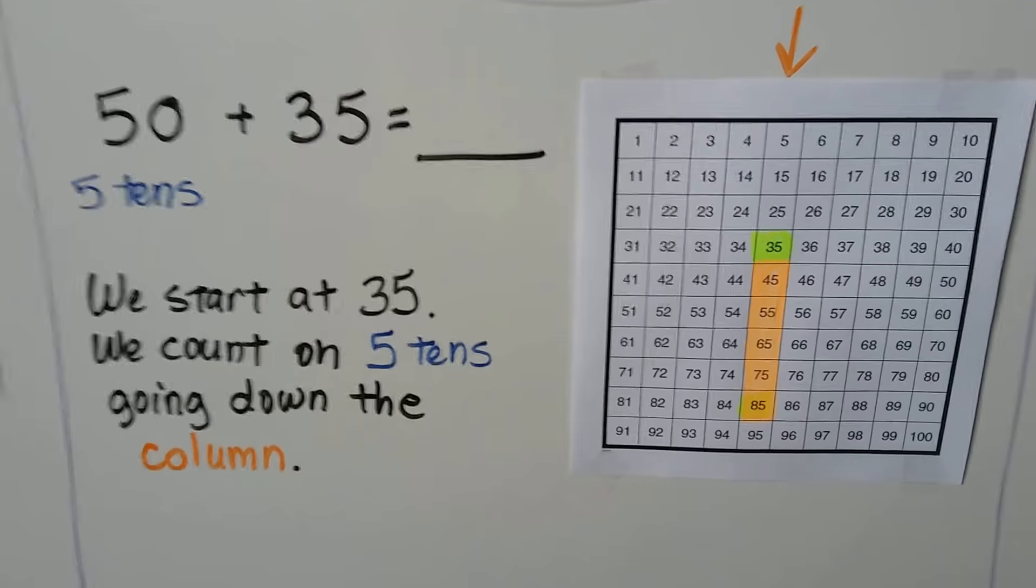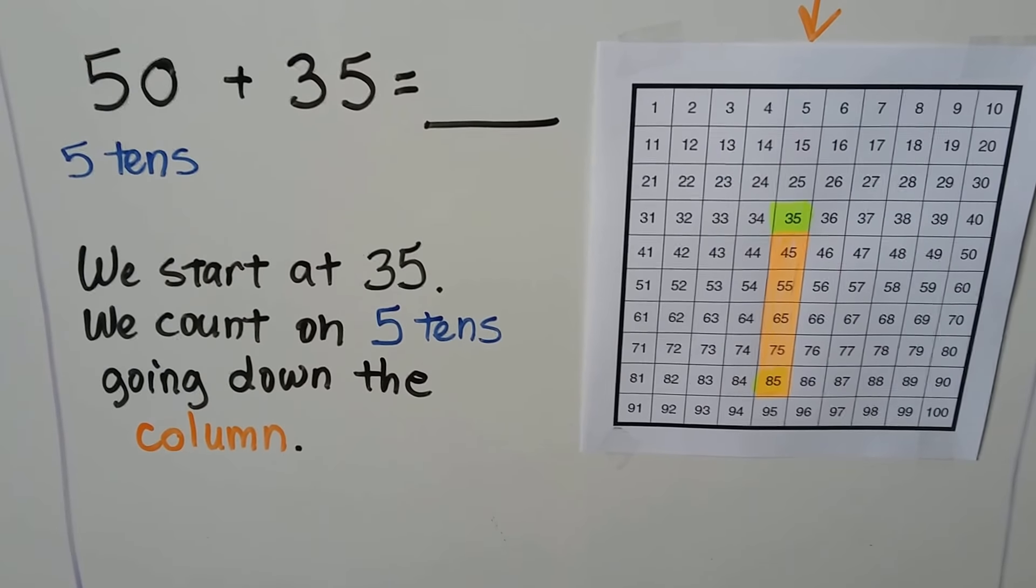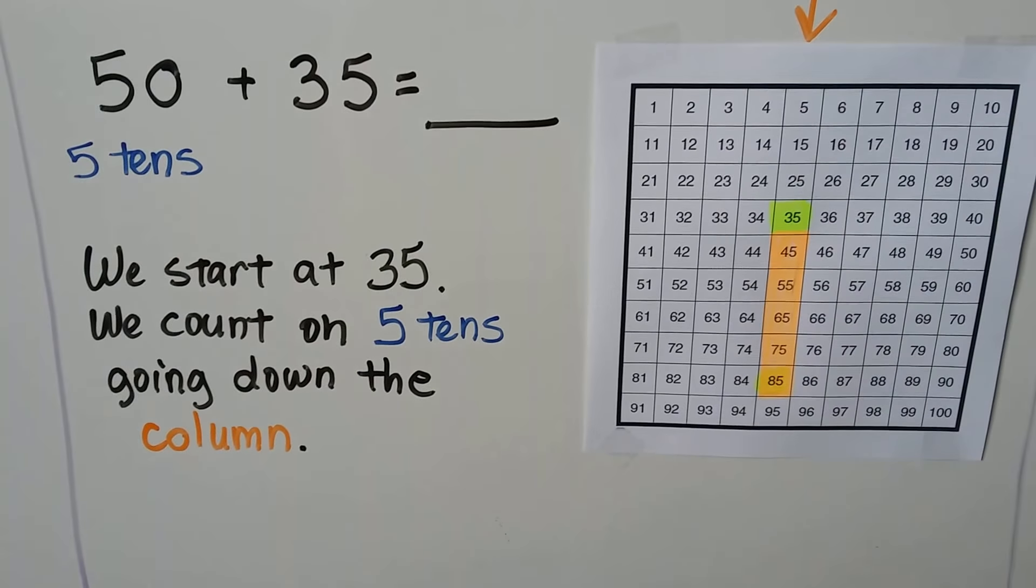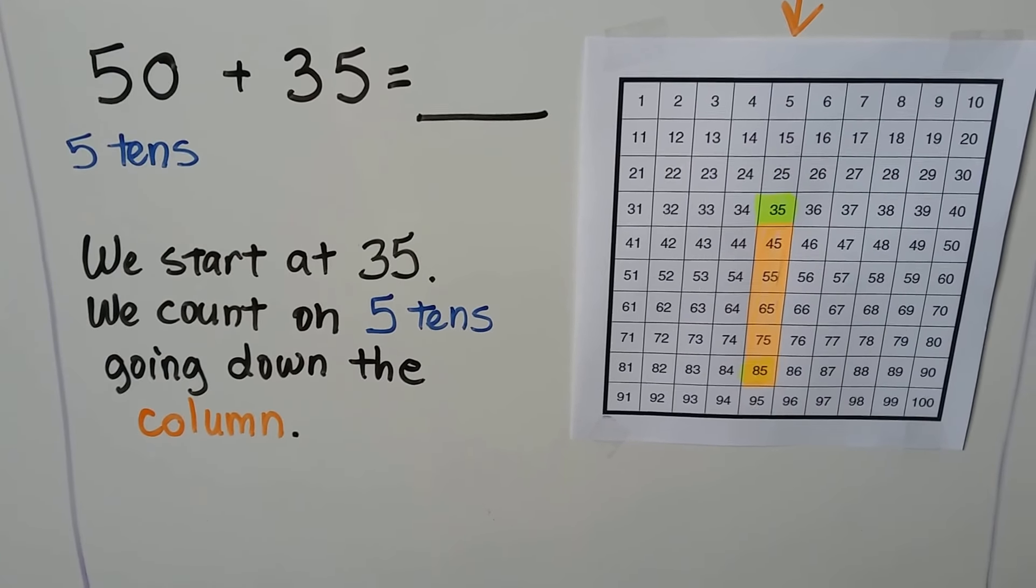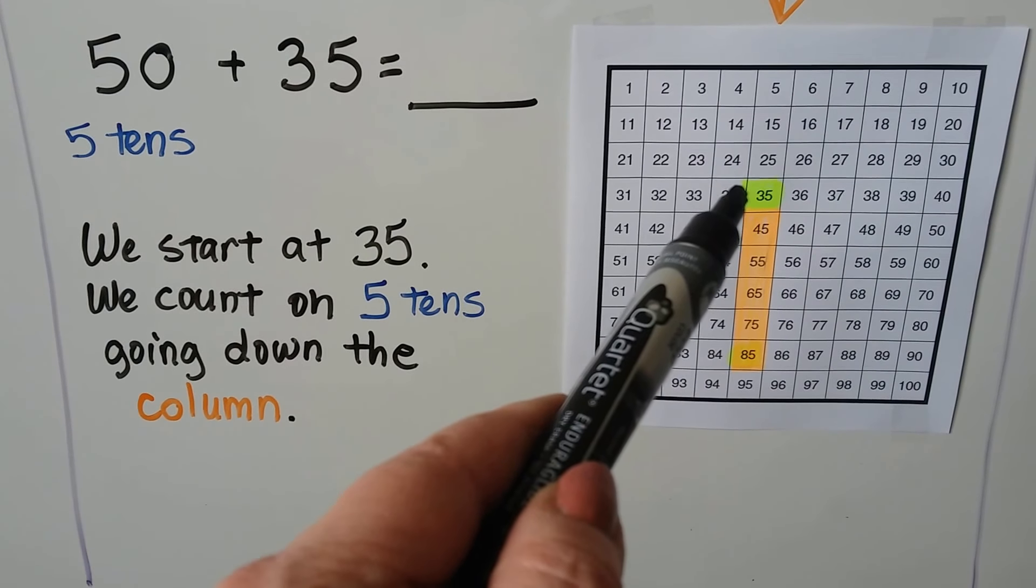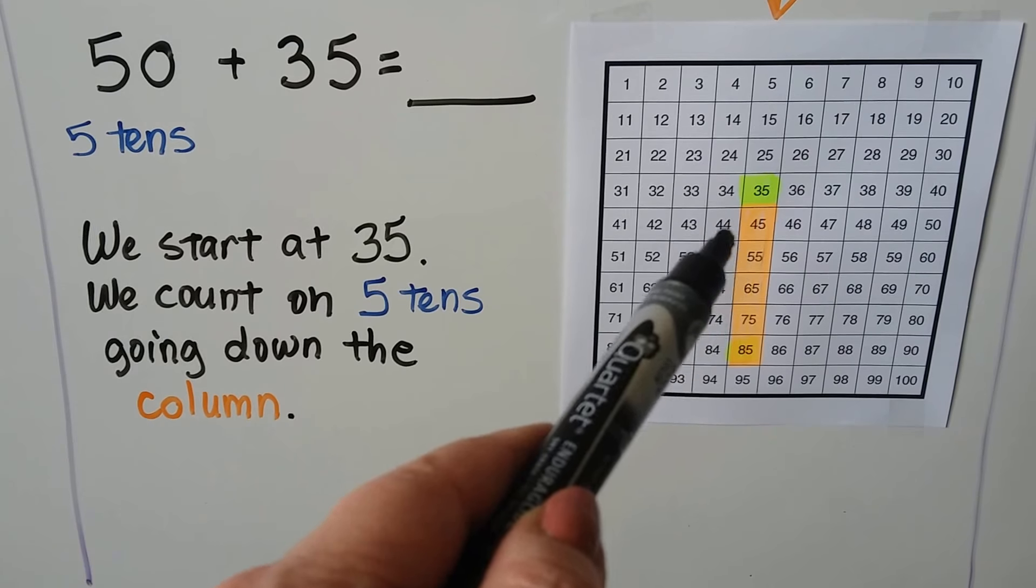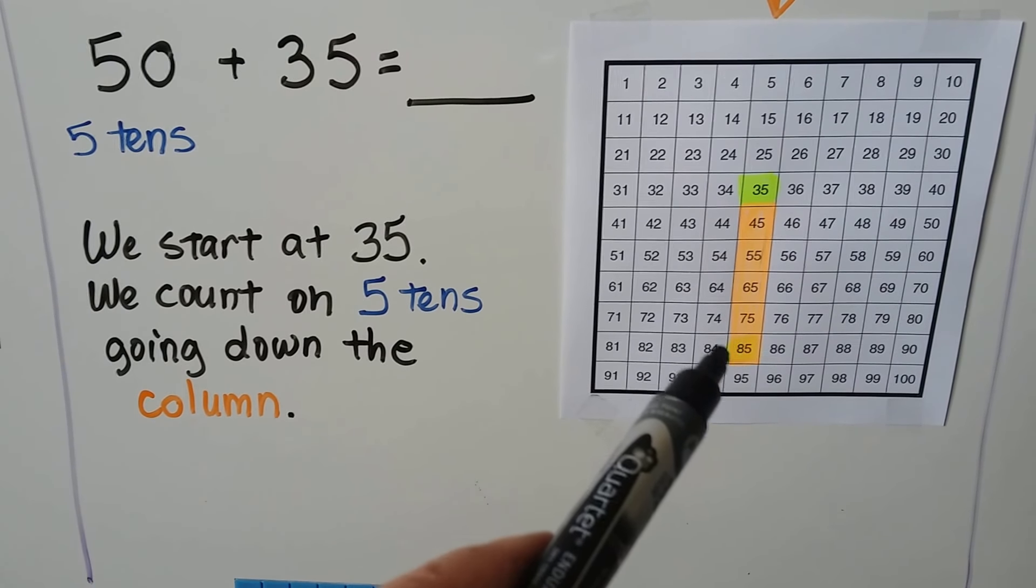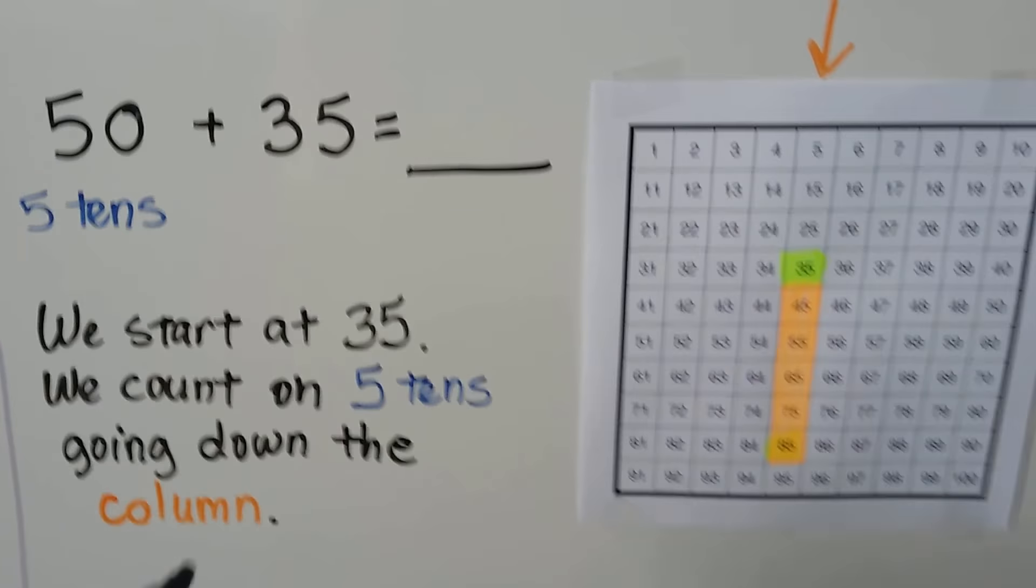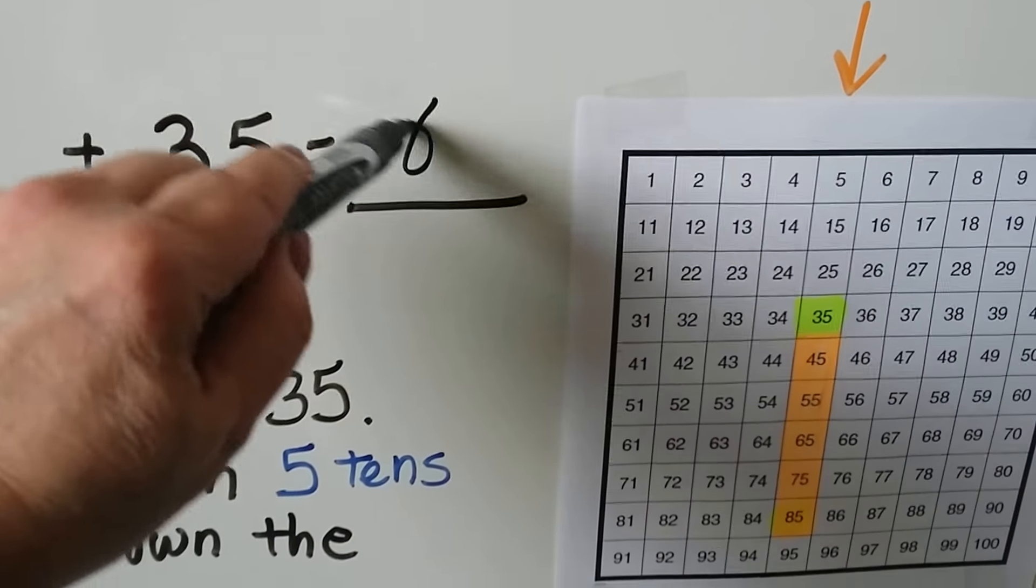Let's try it again. 50 plus 35. 50 is 5 tens. So we're going to start with the 35 and count on 5 tens going down the column. We find the 35 on the 100 chart and count 5 tens. 1, 2, 3, 4, 5. It's 85. 50 plus 35 is equal to 85.